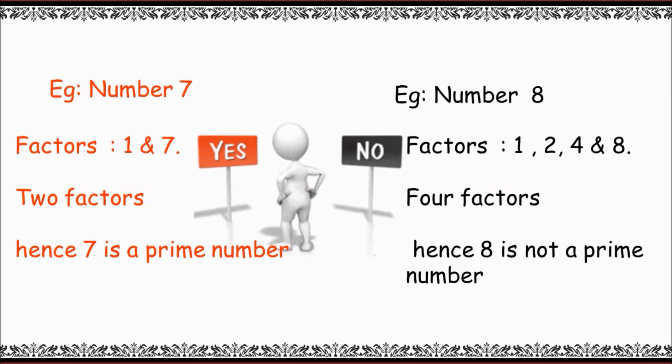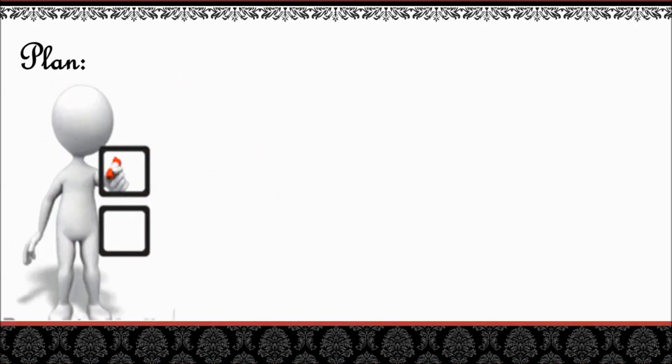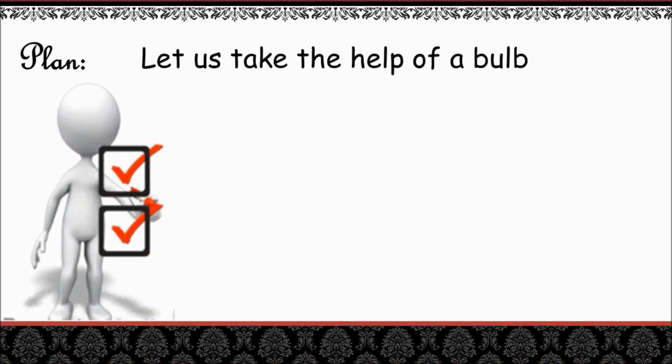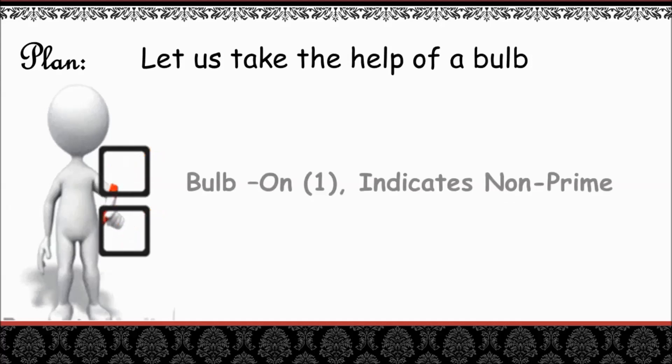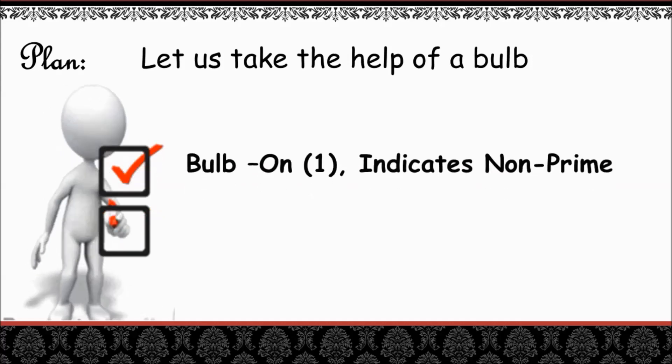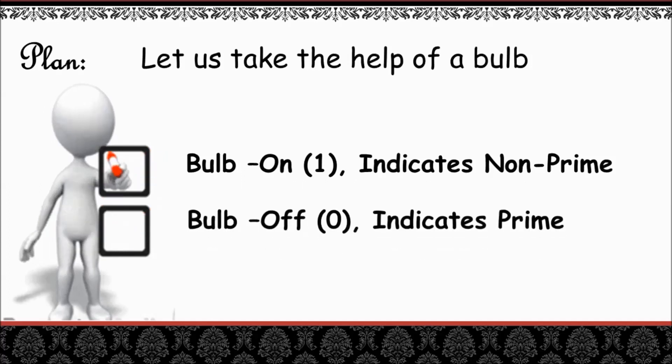So altogether four factors. Hence, 8 is not a prime number. Let us have a plan. Let us take the help of a bulb here. Bulb on indicates non-prime, bulb off indicates prime. Okay, now the action goes like this.